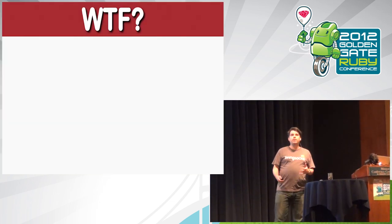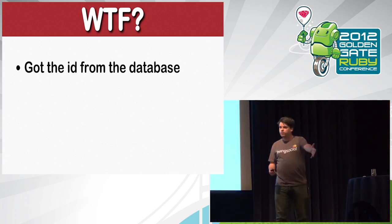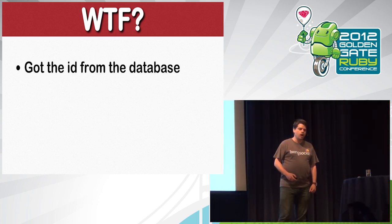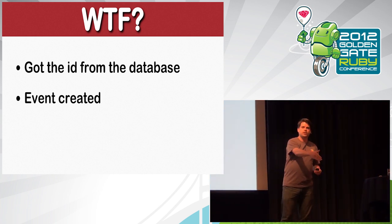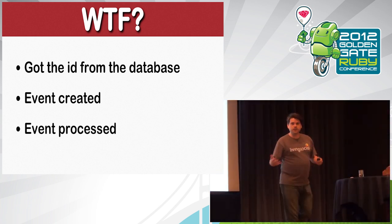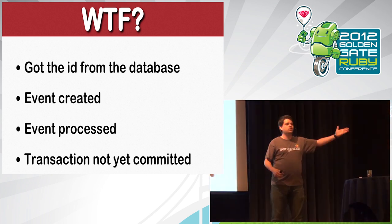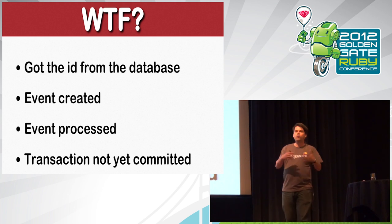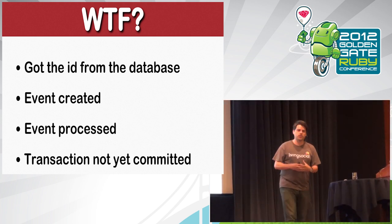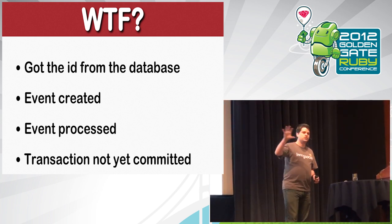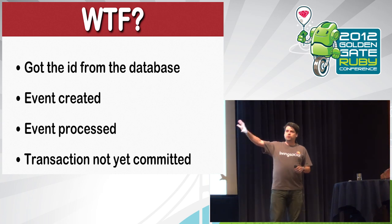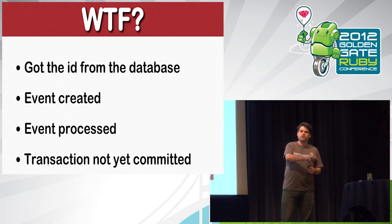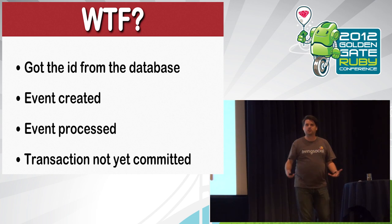Let's play out how this might have occurred. We got the ID from the database, then created our event. The second we created that event, our other process — the Resque worker — sees the job and immediately starts processing it. But the transaction from the controller has not committed yet. While inside that transaction, the ability to roll back is made possible because no one can see what's going on in the database outside of us. But we've sent the ID outside our transaction to someone else who can't see what we've been doing. It's a little race condition, and I see this all the time.